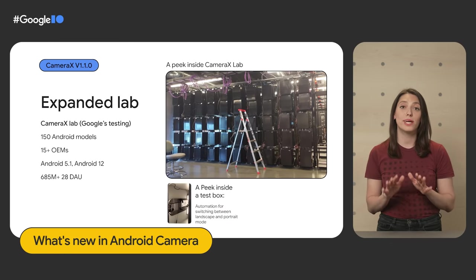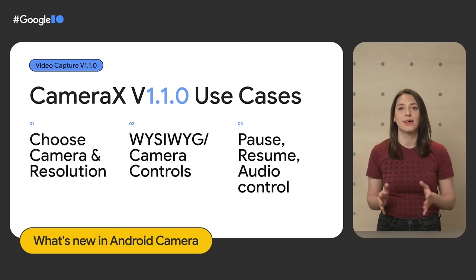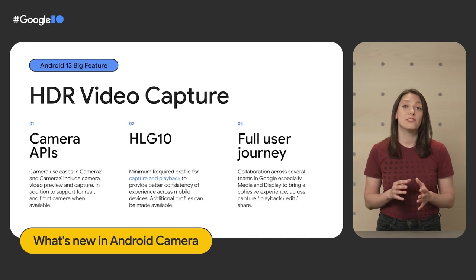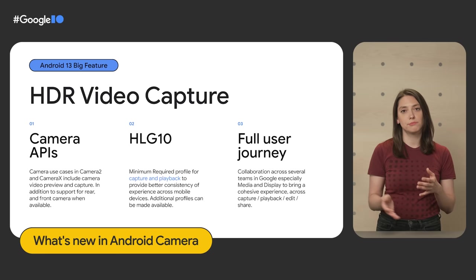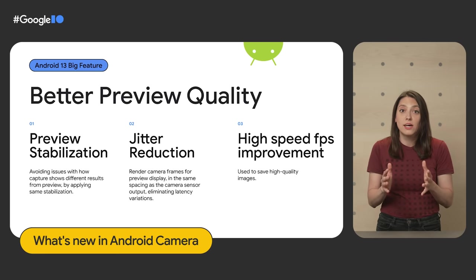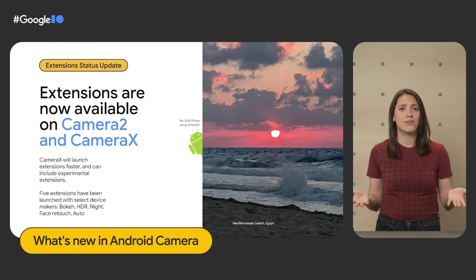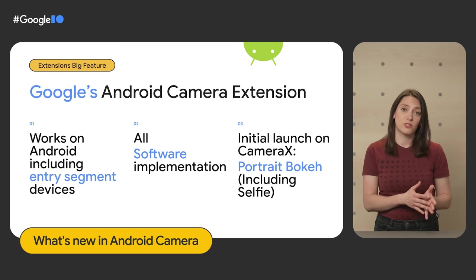Here's a snapshot of what's going on in camera. We continue to invest in the CameraX library as the primary way to work with cameras, working with OEMs and operating our own test lab to ensure consistent support. CameraX version 1.1 is now RC, adding video capture with drop-in WYSIWYG camera controls supporting camera selection, optional audio, and resolutions from SD to 4K. Android 13 introduces HDR video capture; CameraX supports this as well as new preview stabilization and jitter reduction. We're also exploring adding a software Bokeh extension fallback for devices that don't support manufacturer extensions.